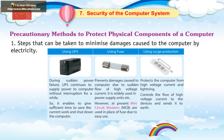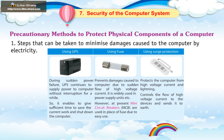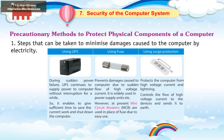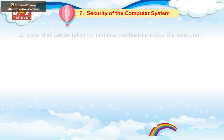However, at present, many circuit breakers (MCB) are used in place of fuse due to ease of use. Using Surge Protection: Protects the computer from high voltage current and lightning. It controls the flow of high voltage currents to the device and sends it to earth.